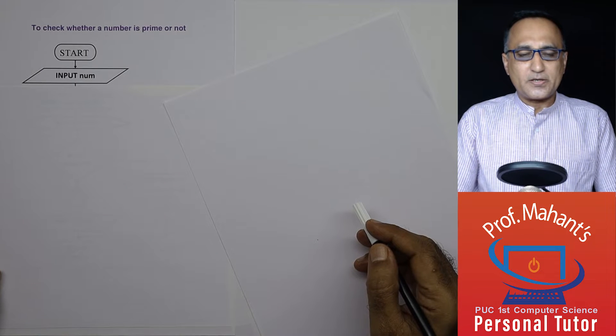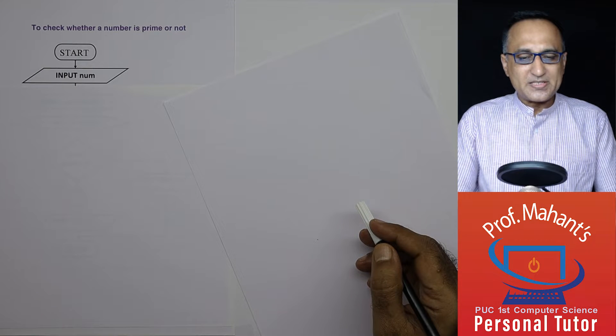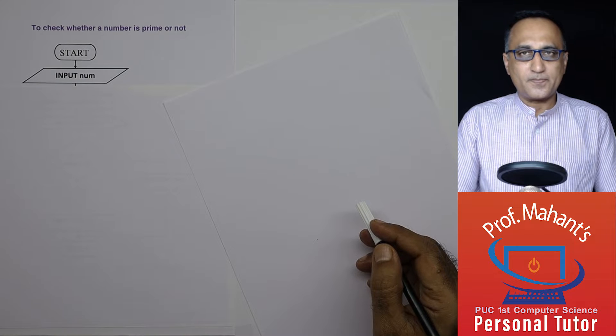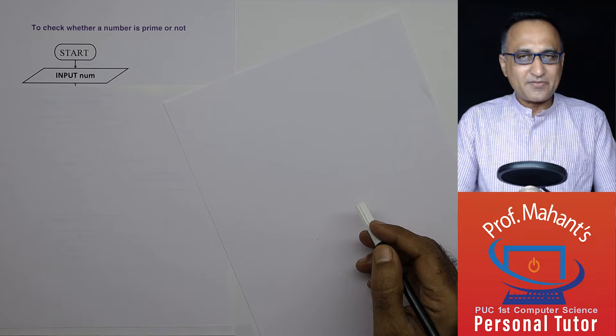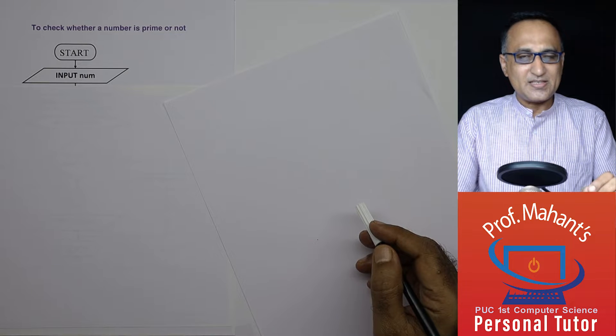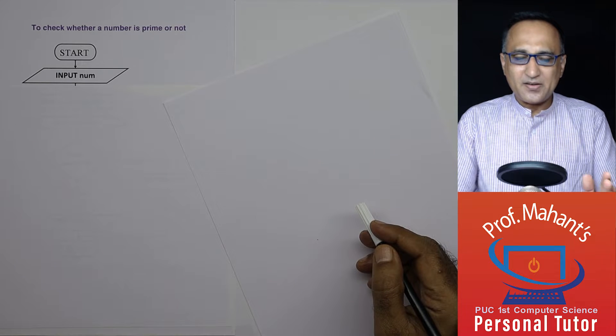We shall now take a look at a flowchart to determine if an input number is a prime number or not. So examples of prime numbers are 2, 3, 5, 7, 11, 13, 17, 23 and so on.